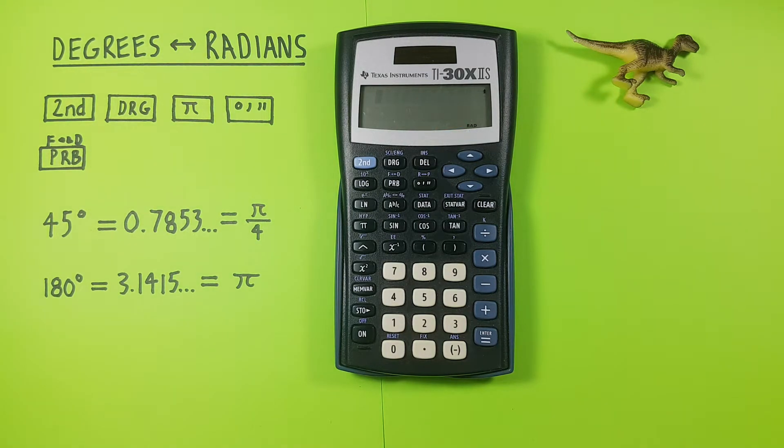Next we enter our degrees, so for us that was 45. And now we want to tell our calculator these are degrees.